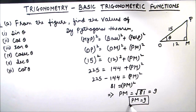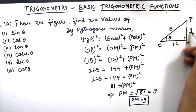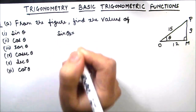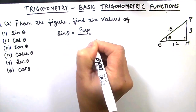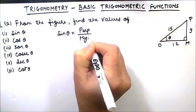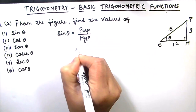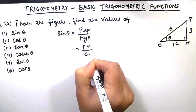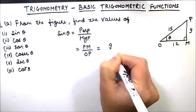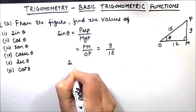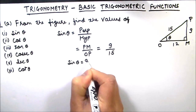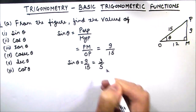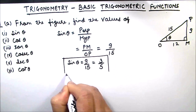Now we are going to find the trigonometric ratios using the lengths of all three sides of the triangle. Sin theta is equal to perpendicular upon hypotenuse. Here perpendicular is PM over OP. PM length is 9 and OP is 15, so sin theta is 9 by 15. We can reduce it further — this will be 3 by 5. This is the value of sin theta.